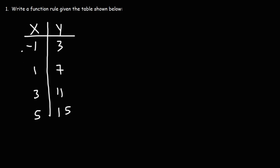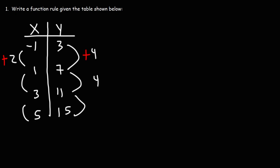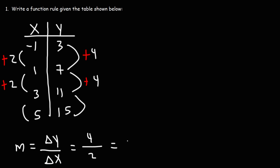Notice that the change in x for the second example is positive two, and the change in y is positive four. We have a constant change in y for every constant change in x, so we're dealing with a linear function. Calculating the slope — change in y over change in x — gives us four divided by two, which is two. So our m value is two.